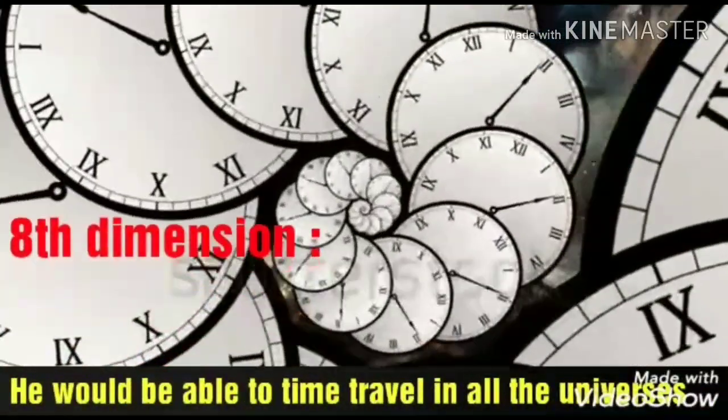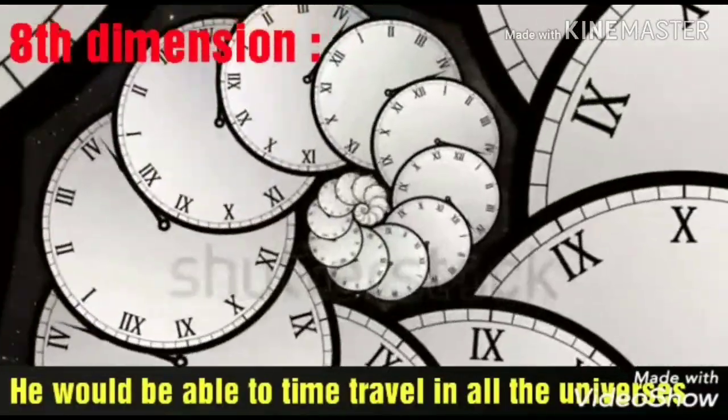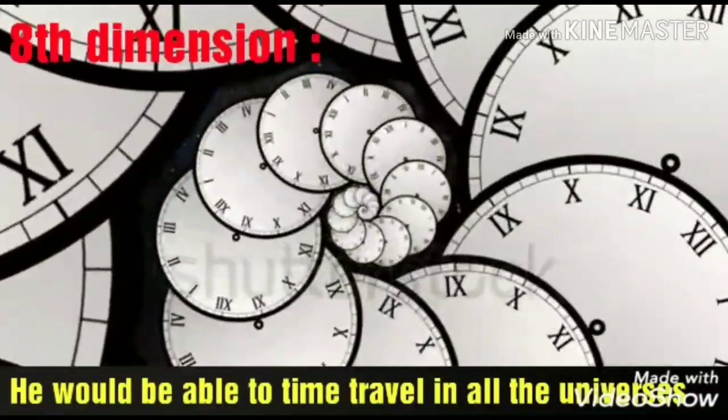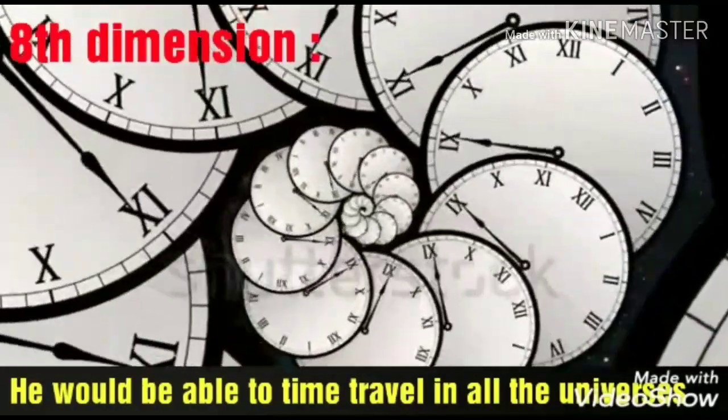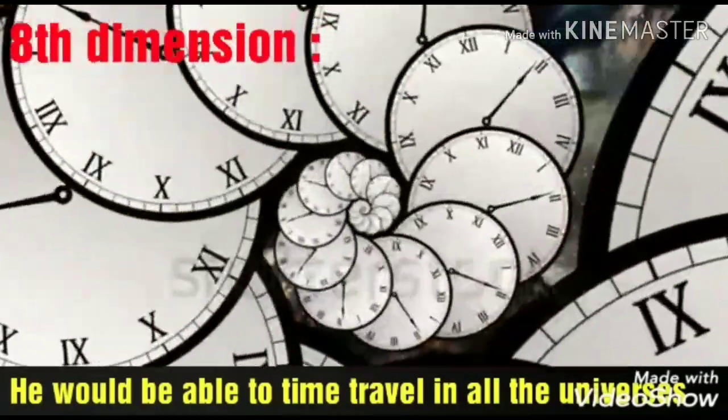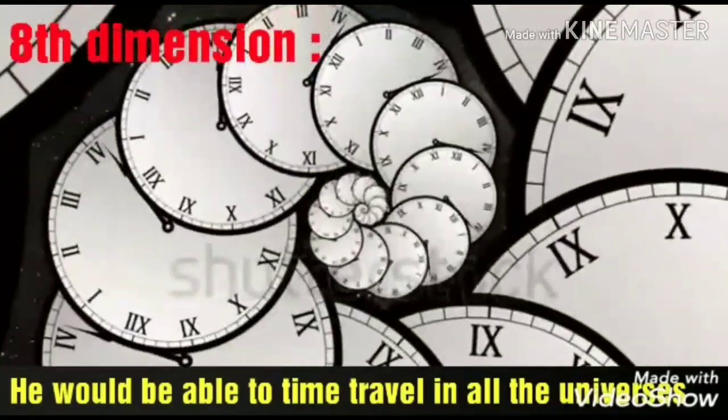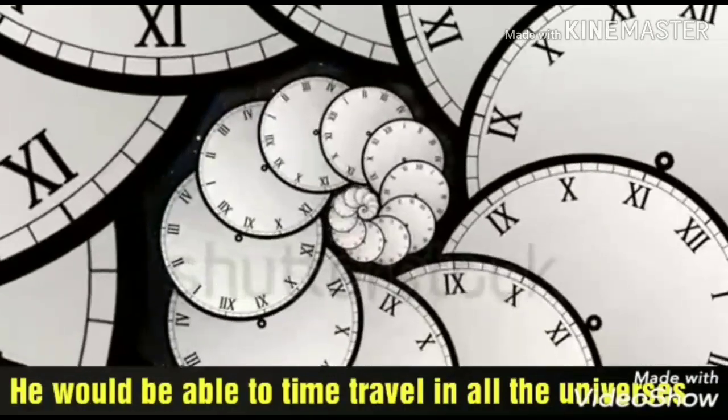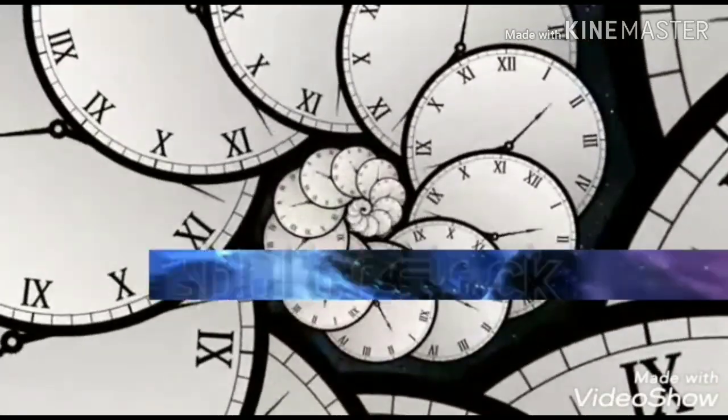Ninth, eighth dimension. It represents time and space of all the multiverse and has 256 mathematical points. An eighth dimensional being would be able to travel to all the universes and time travel in all those universes.